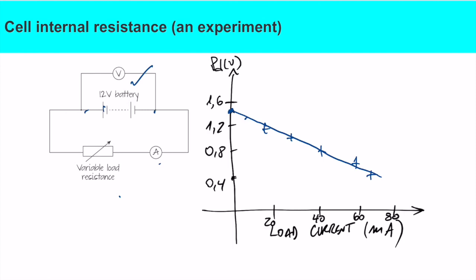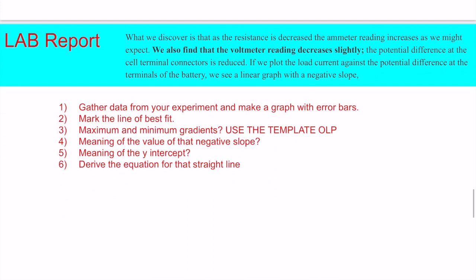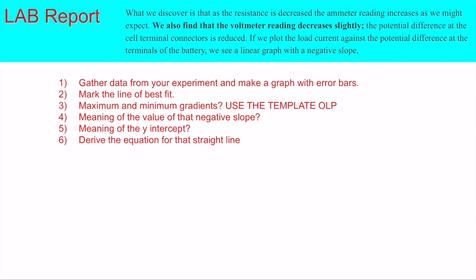For any simple battery, we just increase the current from 20 to 80 milliamps and see how the voltage across the battery drops. As the resistance is decreased, the ammeter reading increases as expected, but the voltmeter reading decreases slightly. That means the internal resistance is increasing. In the experiment, we gather the data with error bars, mark the line of best fit, and then use the maximum and minimum gradient. You can use any method - the template I shared with you or logger pro with manual fit.